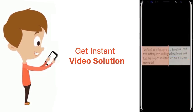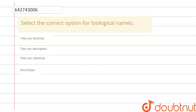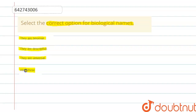The question is: select the correct option for biological names. There are four options given — they are binomial, they are descriptive, they are universal, or all of these. First, we need to talk about biological names.